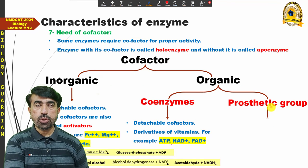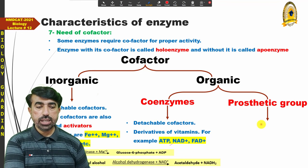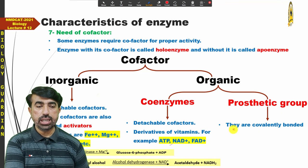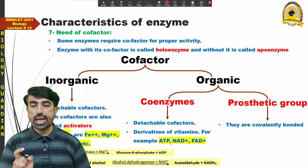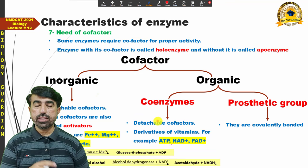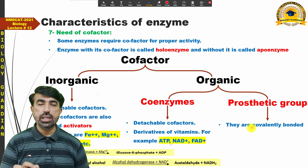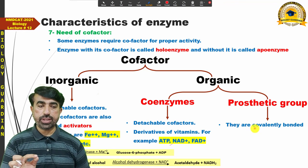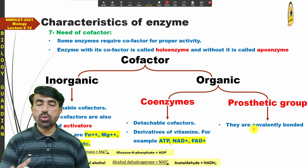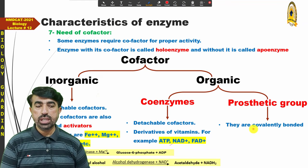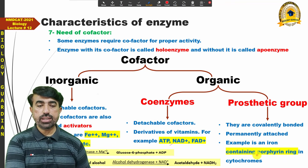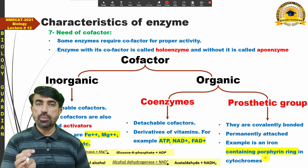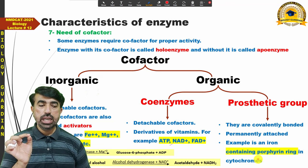Prosthetic groups are different from coenzymes and activators — they are organic in nature but are covalently bonded to the enzyme. Unlike coenzymes and activators, they are not loosely bonded and do not only participate at the start of the reaction. They are the permanent part of the enzyme — they detach only when the enzyme is destroyed. They are covalently and permanently attached. An example is the heme group, which contains a porphyrin ring.